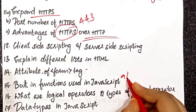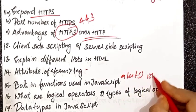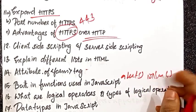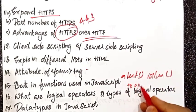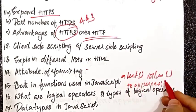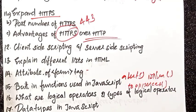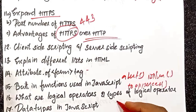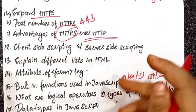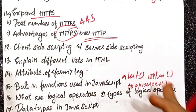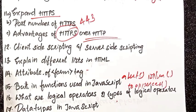The list of built-in functions in JavaScript includes alert. It is used in JavaScript. Logical operators and types of logical operators — there are three types of logical operators: AND, OR, and NOT.